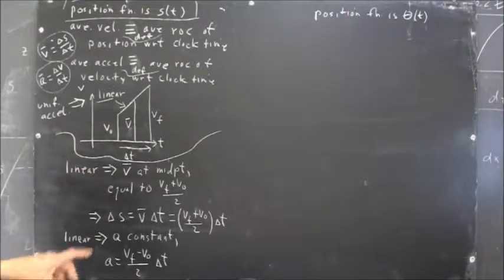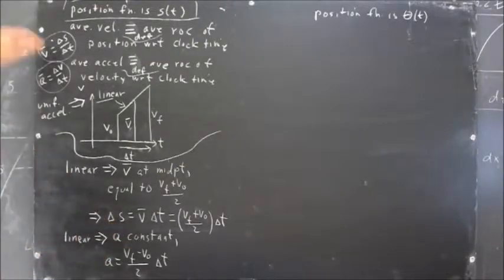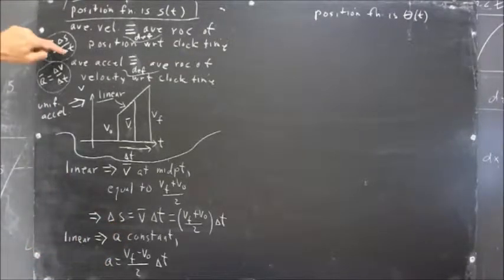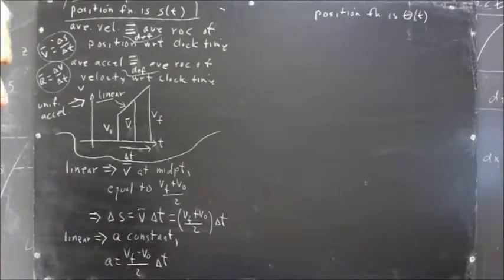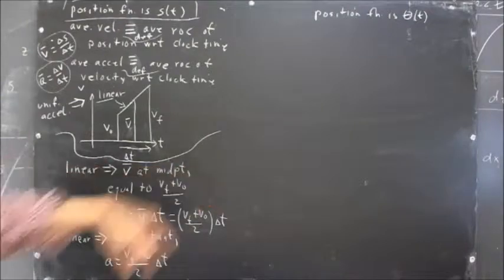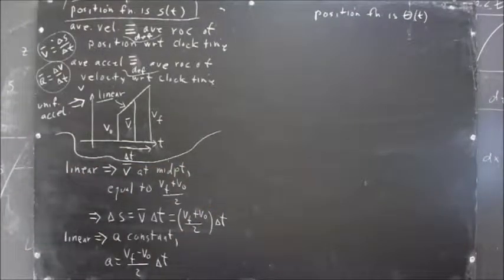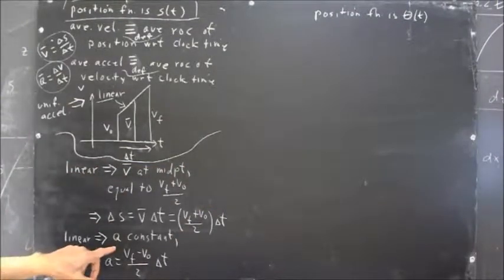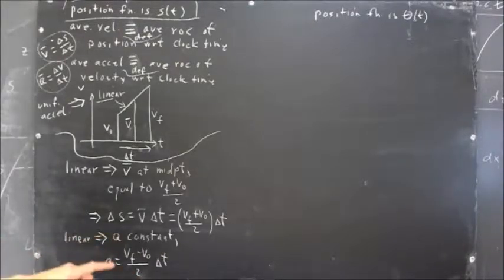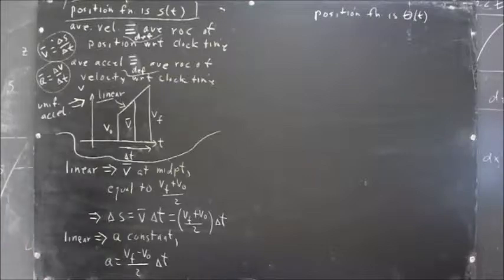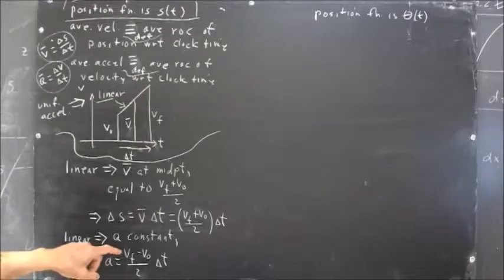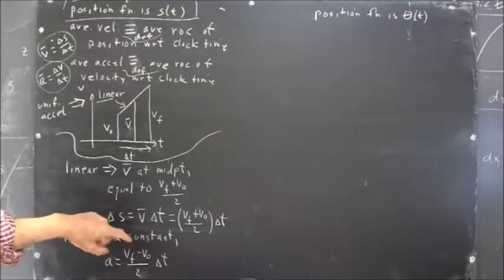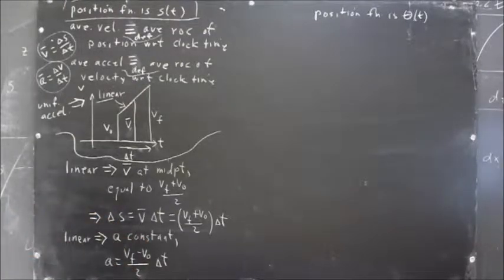From that, we conclude that the change in position, which is equal to V bar times delta T, is equal to VF plus V naught over 2 times delta T. And right there is one of our equations of uniformly accelerated motion. And if it's linear, then A is constant. So we don't have to talk about average acceleration, the average value of A. We can just say that the value of A for the entire interval of uniform acceleration is the change in the velocity.